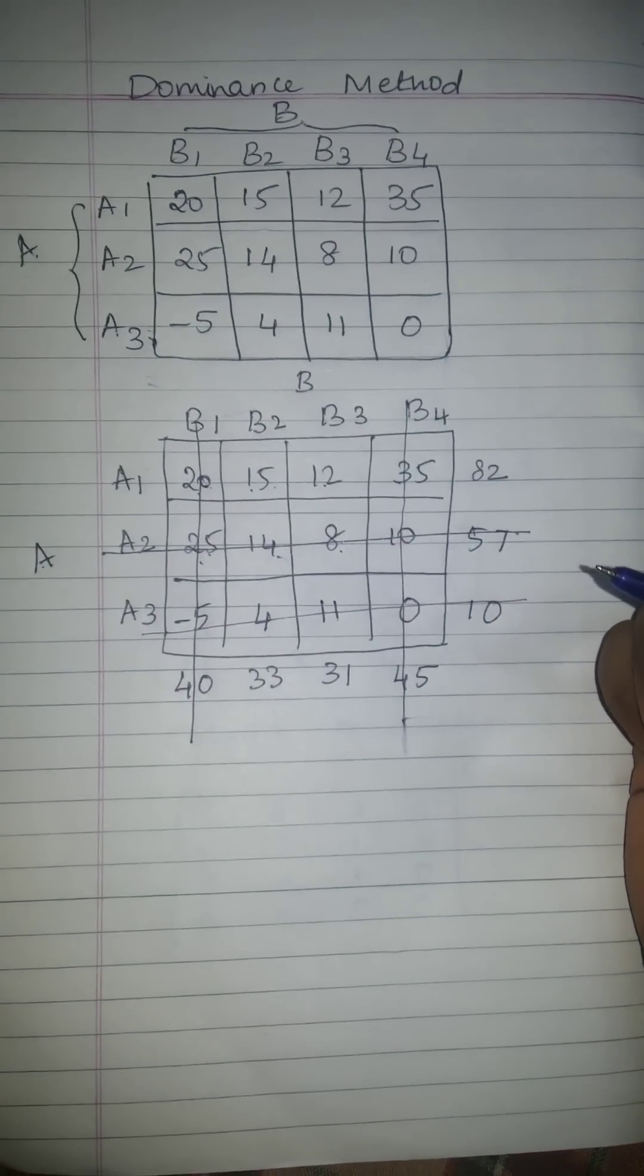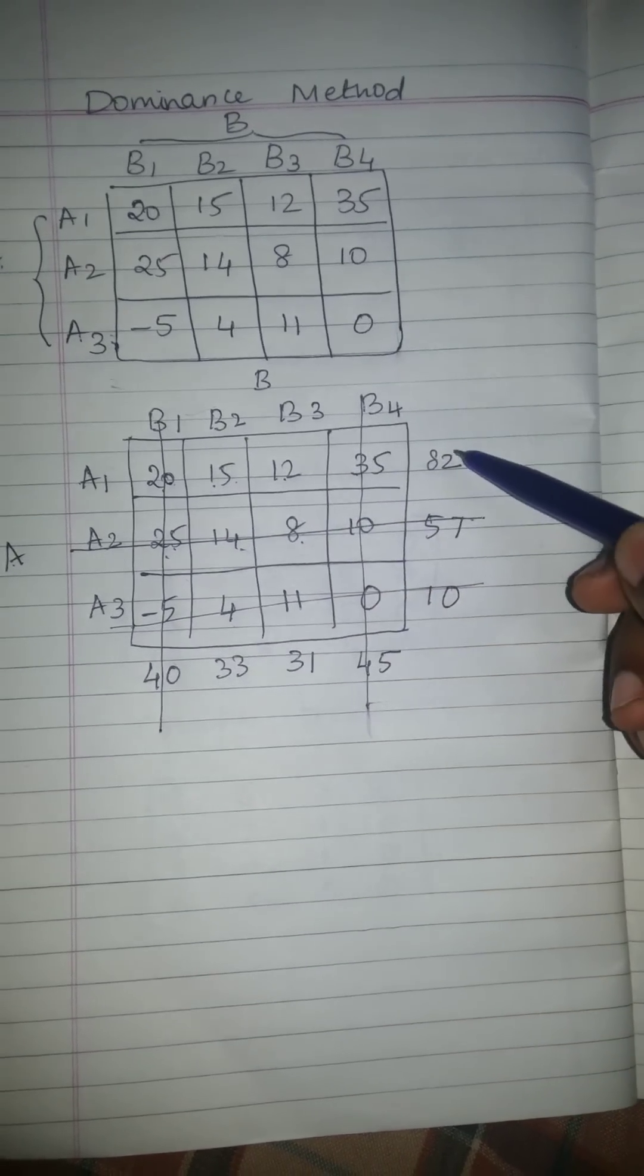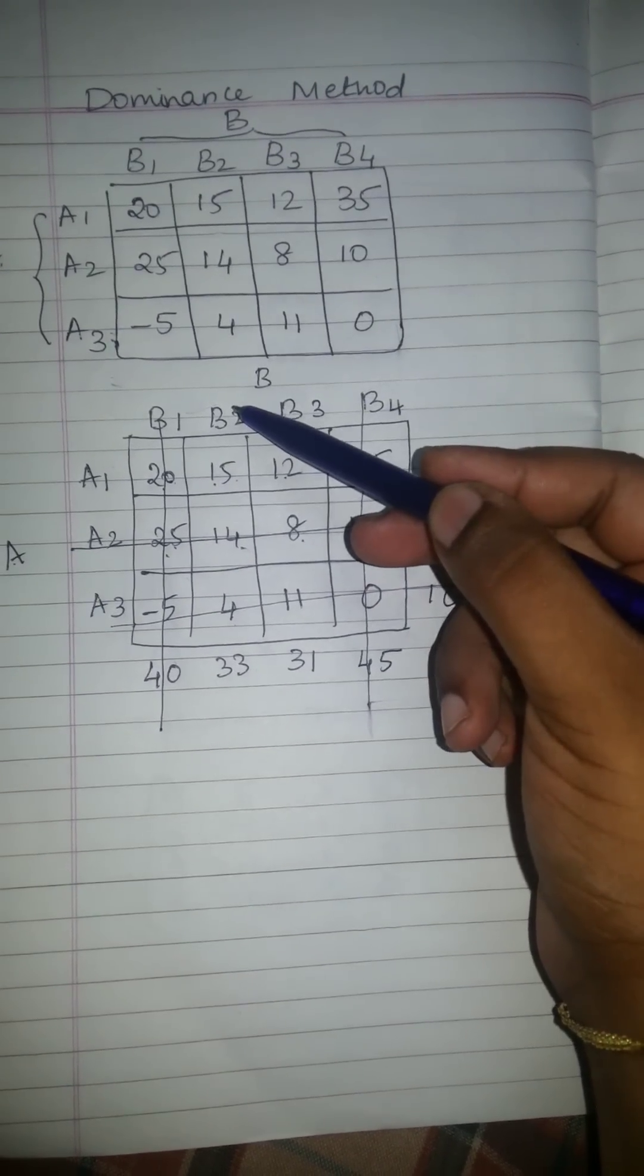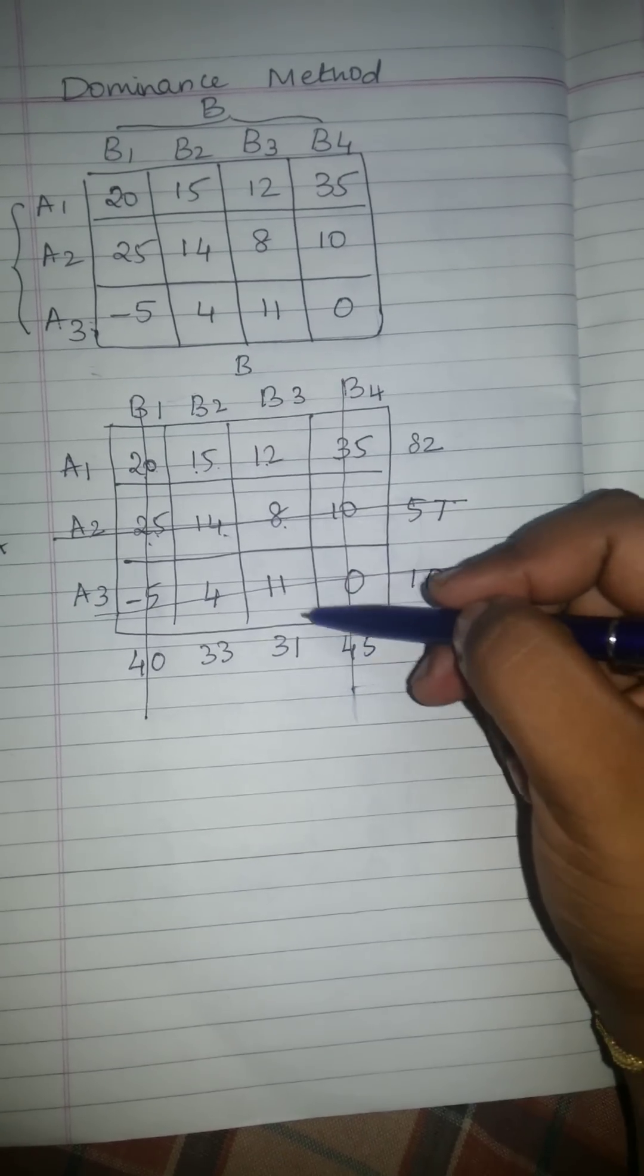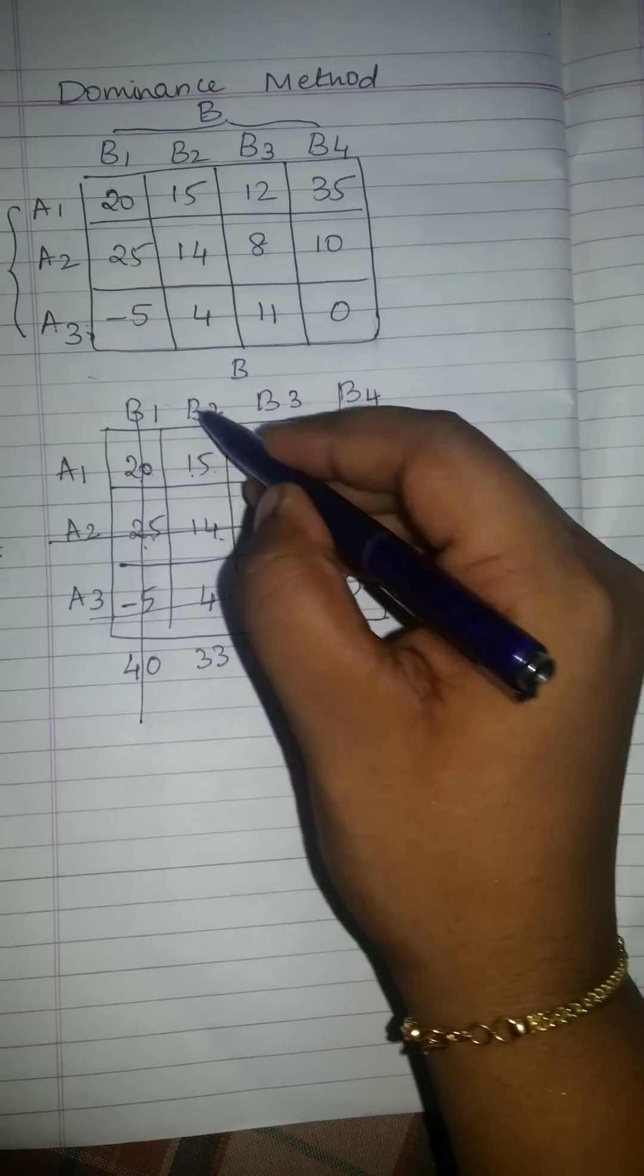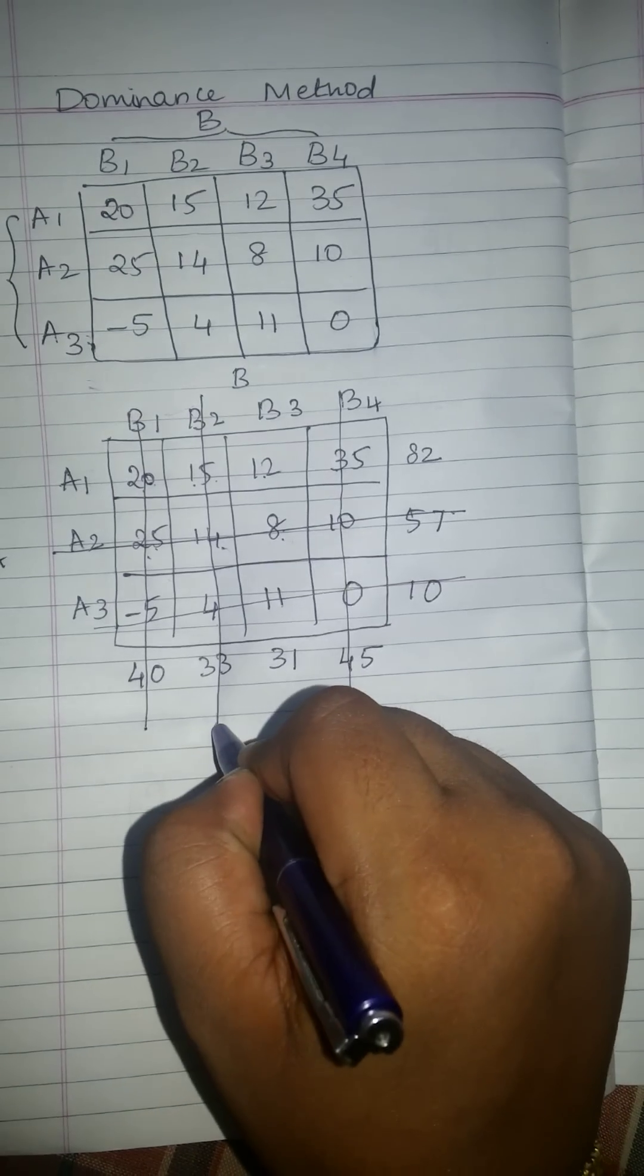Now it is A's turn again. But here there is no other row left other than this. We can't cancel this now. So next it is B's turn now. Here B, we will see which is the largest value. That is 33. Now I am going to cancel this particular column.